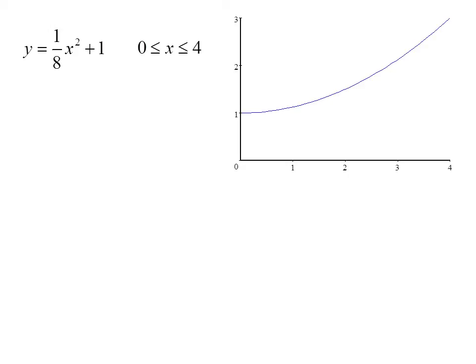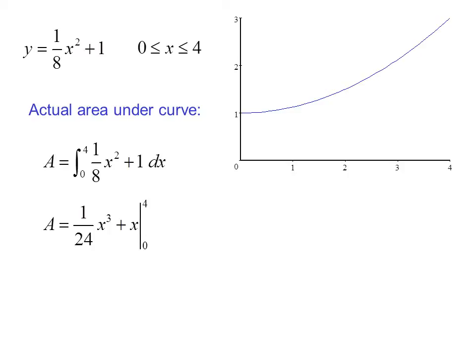For our example, we'll use y equals 1/8 x squared plus 1 over the interval from 0 to 4. The actual area under the curve can be found by taking the integral from 0 to 4 of 1/8 x squared plus 1 dx, which is 1/24 x cubed plus x evaluated from 0 to 4, or 20/3, which is 6.6 repeating.